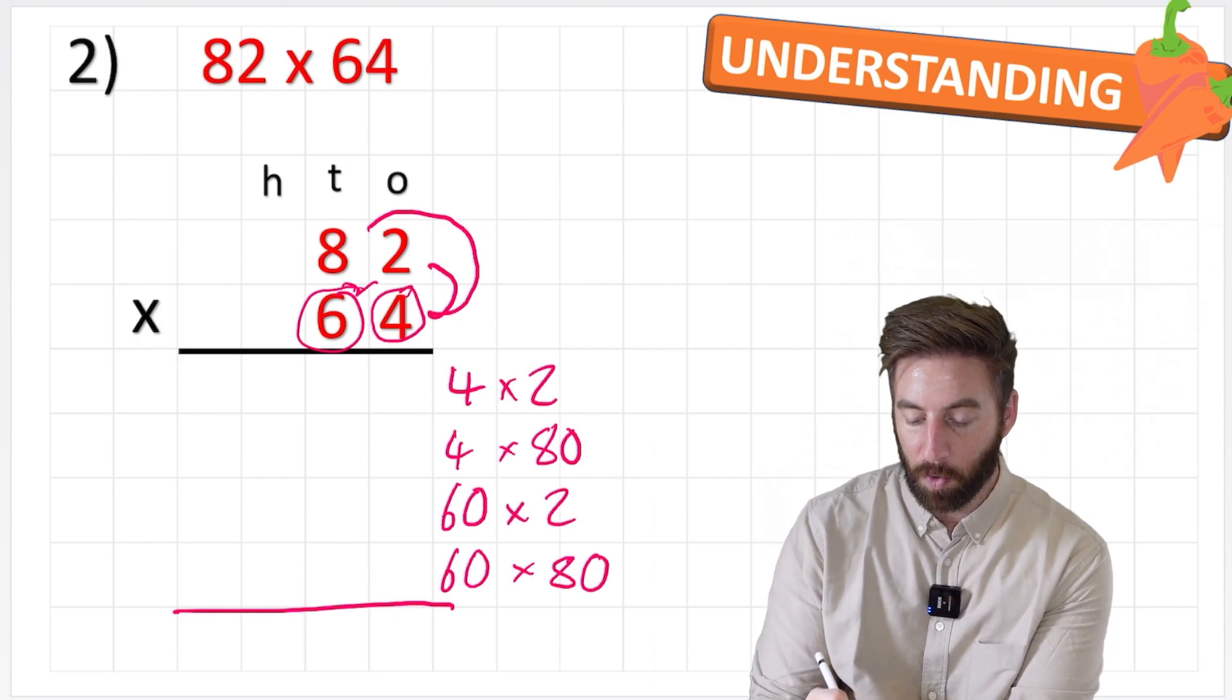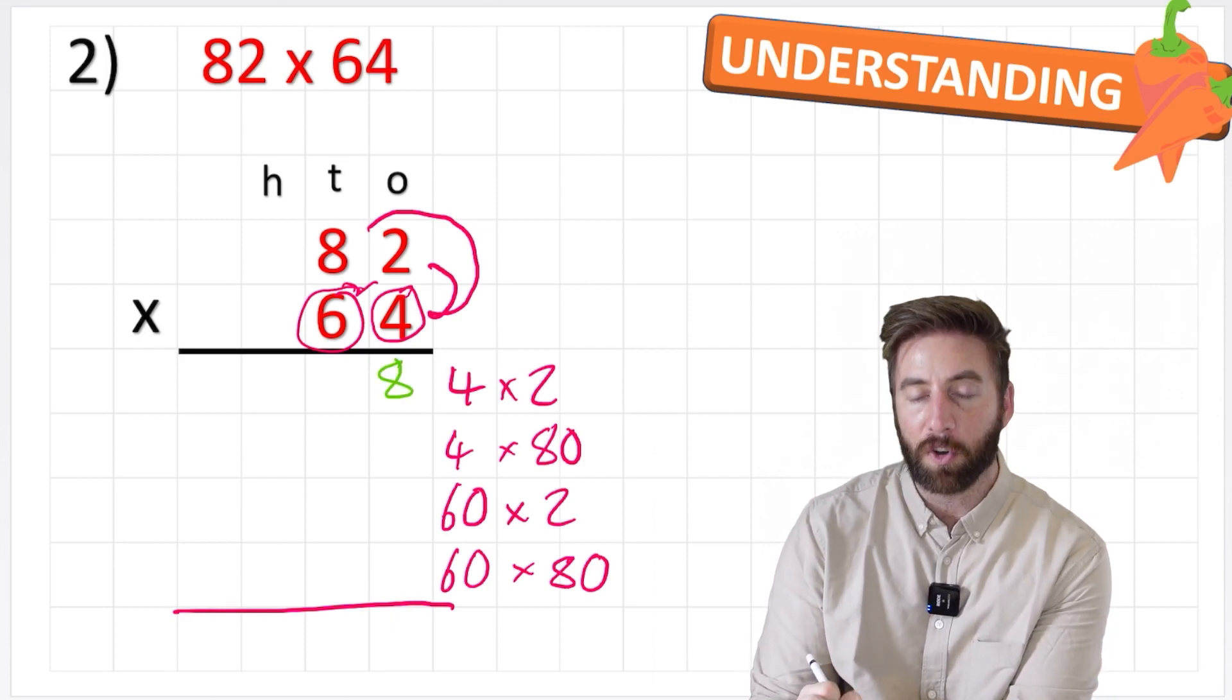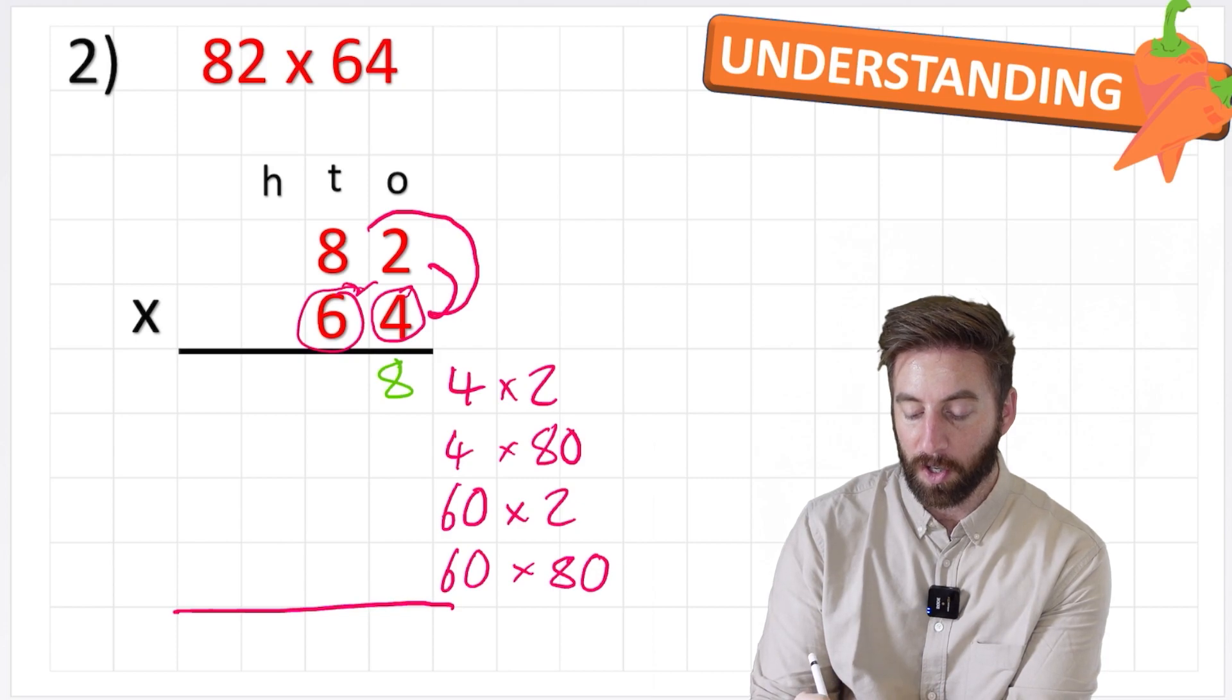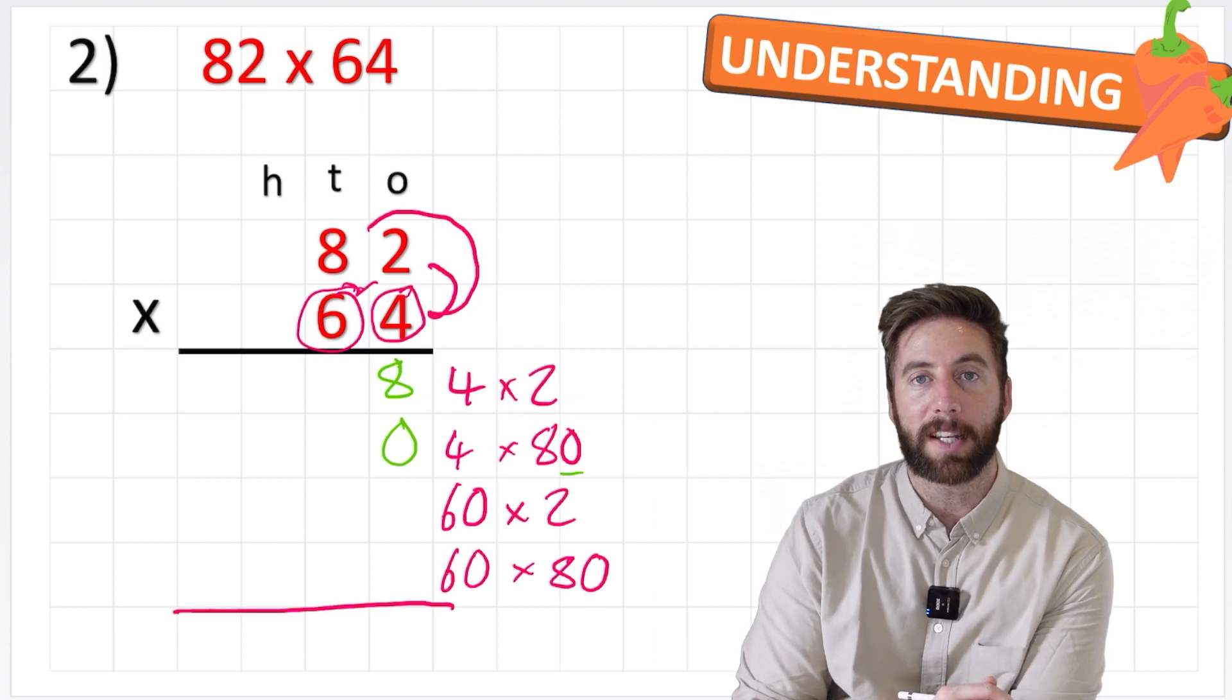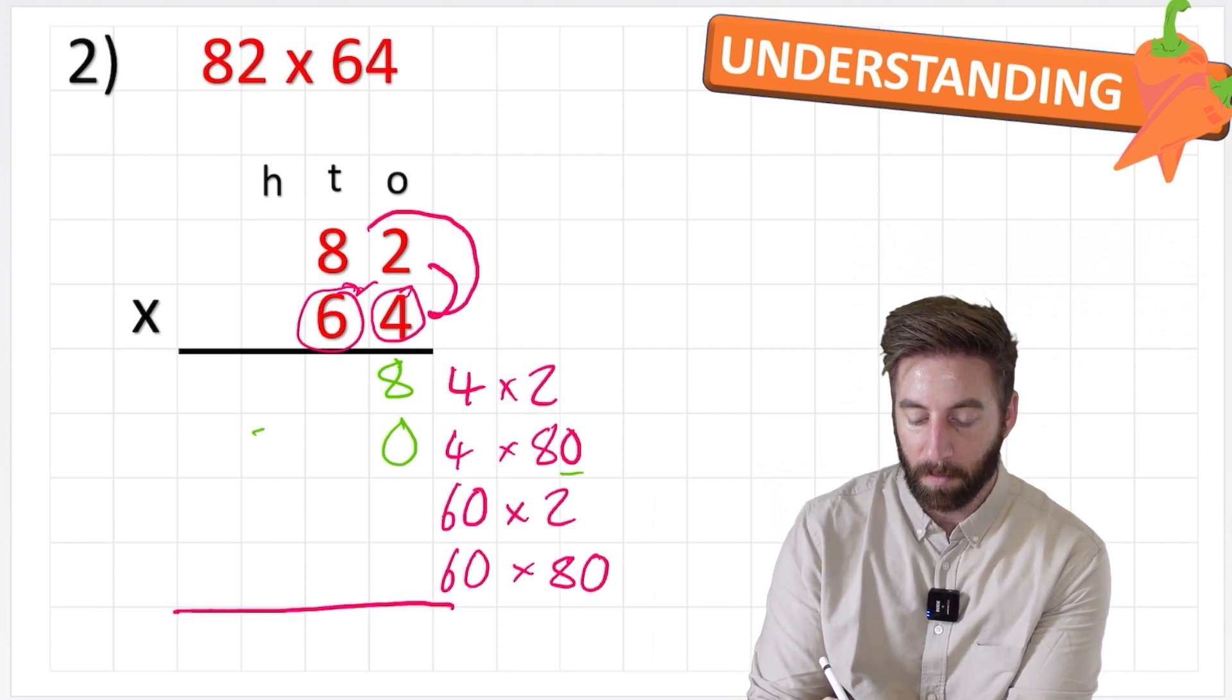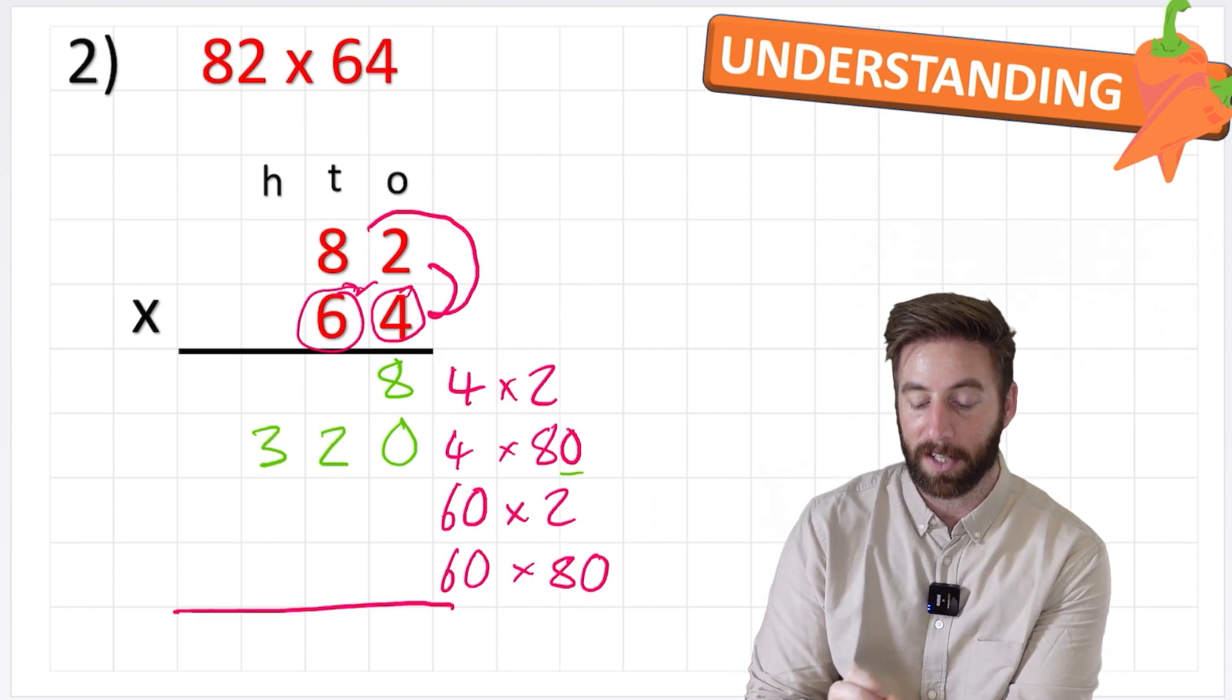Here we go. 4 times 2 is 8. 4 times 80, not sure. So I'm going to use my place value, put my 0 in place. Now I can do 4 times 8. 4 times 8 is 32. Put that in place. So 4 times 80 is actually 320.